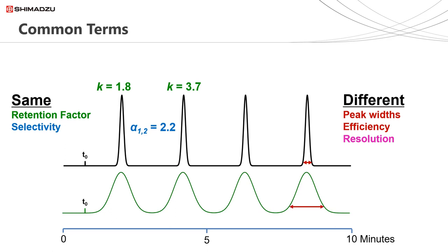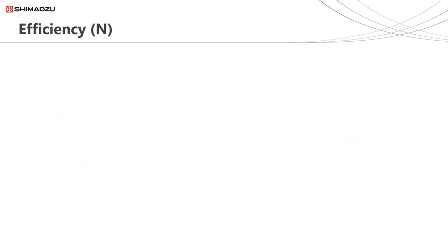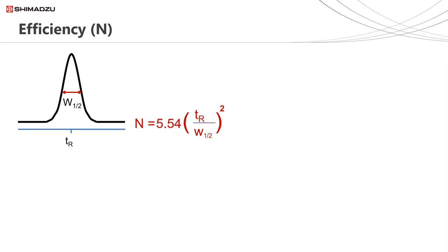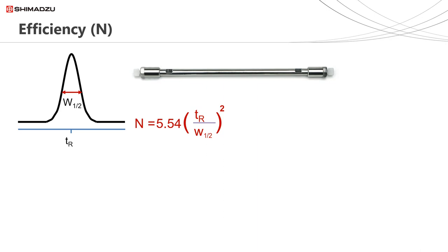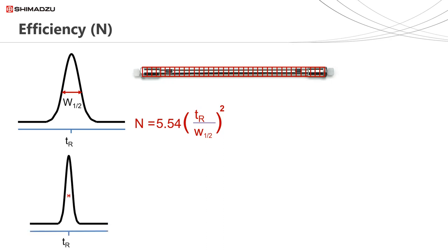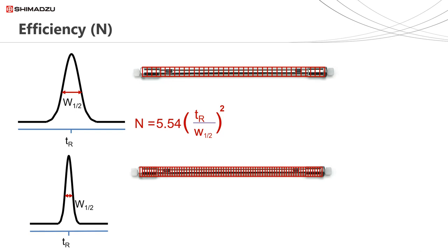Peak width affects efficiency and also resolution. Efficiency N can be calculated using this equation. What we need is a value for the retention time TR and the peak width. This particular equation uses the value for the peak width at half height, but other equations use the peak width at 10% height or the tangent width. The value this equation gives is the number of theoretical plates for the column which generated the peak. If we now look at a narrower peak eluting at the same retention time, then the efficiency N, or the number of theoretical plates in this column, is higher.